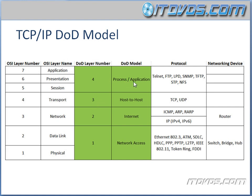For example, the Process/Application layer is actually layer 4 in the DOD model, and that encompasses the application, presentation, and session layers in the OSI model.